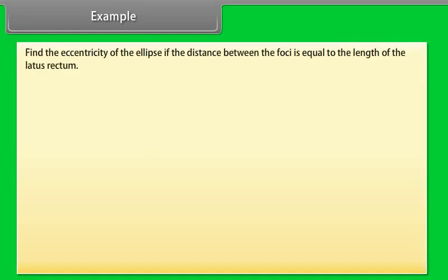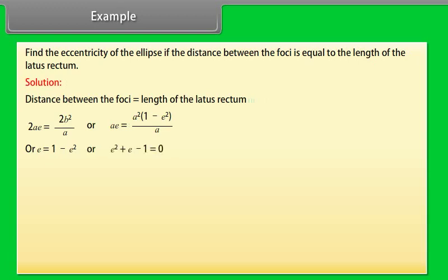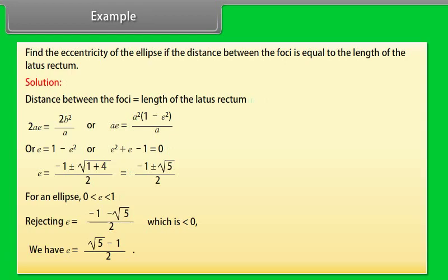Example: Find the eccentricity of the ellipse if the distance between the foci equals the length of the latus rectum. Solution: 2ae = 2b²/a, so ae = a²(1 − e²)/a, giving e = 1 − e², or e² + e − 1 = 0. Thus e = (−1 ± √5) / 2. For an ellipse, 0 < e < 1, so we reject e = (−1 − √5)/2. Therefore E = (√5 − 1) / 2.